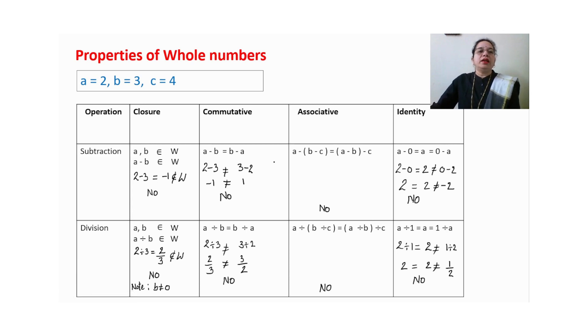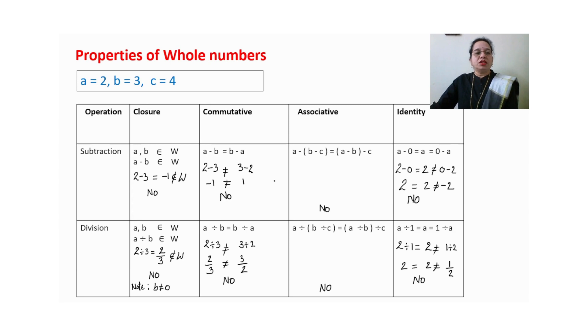In Grade 6 we study these four properties for whole numbers. In Grade 7 you will do the same for integers, and in Grade 8 for rational numbers. The basic concept is the same for all three topics.